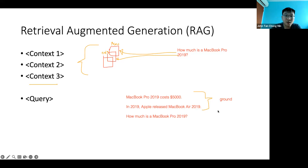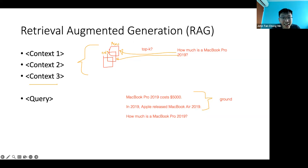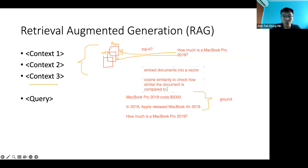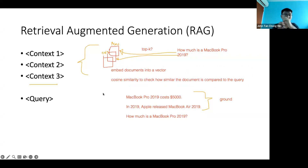As a refresher — what is the most common metric used to select the top-K most relevant documents in retrieval augmented generation? The answer is dot product or cosine similarity. Usually we use some form of embeddings — you embed your documents into a vector, and then use cosine similarity to check how similar the document is compared to the query. This whole process of doing retrieval augmented generation and passing over knowledge graphs is very, very similar.